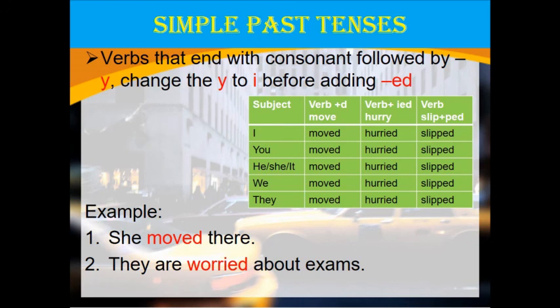Likewise, those verbs that end with a consonant where before it is a vowel, you will have to double the consonant before adding ed. For example, in a sentence: She moved there — 'moved' is a past tense verb. They are worried about exams — 'worried' is a past tense verb. The normal form ends with y; we change y to i, and since the letter before it is a consonant, we then add ed.